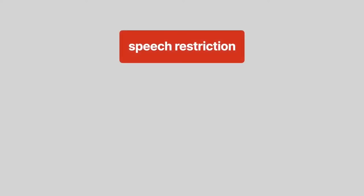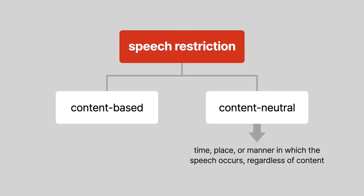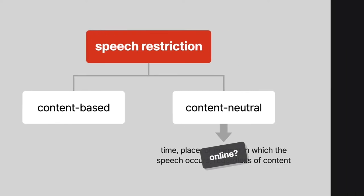Statutes that restrict speech can be content-based or content-neutral. Content-neutral restrictions are based on factors such as the time, place, or manner in which the speech occurs, regardless of content. Traditional examples deal with physical places. But what about online?